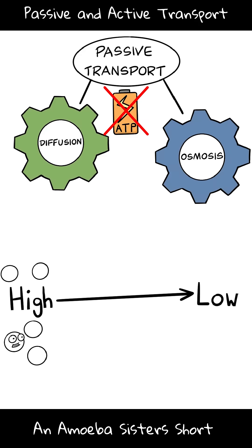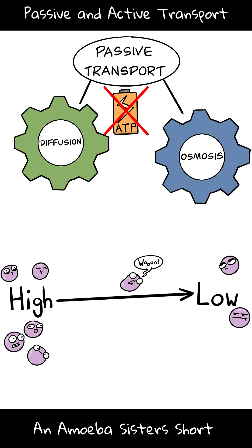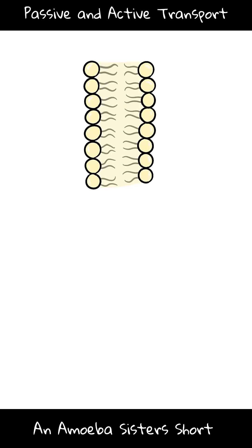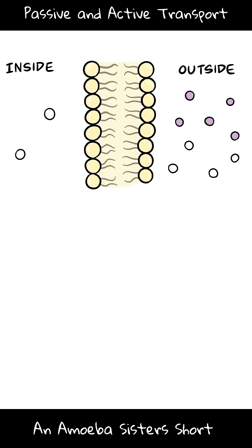Substances move with their gradient, which means a net movement from a high to low concentration. So if the high concentration of a substance is outside of the cell, the net movement of the substance will be in.